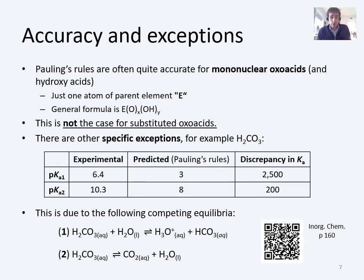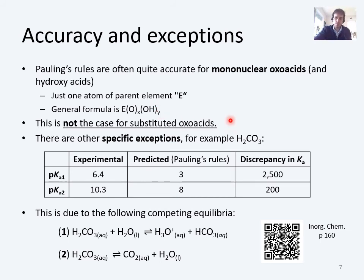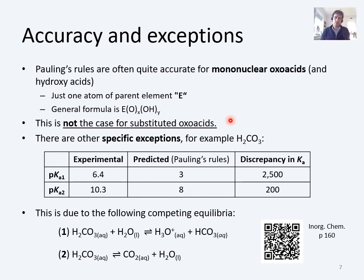A key point about Pauling's rules is that they are actually pretty decent for many mononuclear oxoacids — where you have just one parent element with that general formula. But when you start substituting in different groups, such as a CF₃ group or an amine group in place of one of those OH groups, that prediction is no longer going to be accurate. The way to explain the difference between the predicted and experimental value is by the electron-withdrawing or donating effects we talked about already.